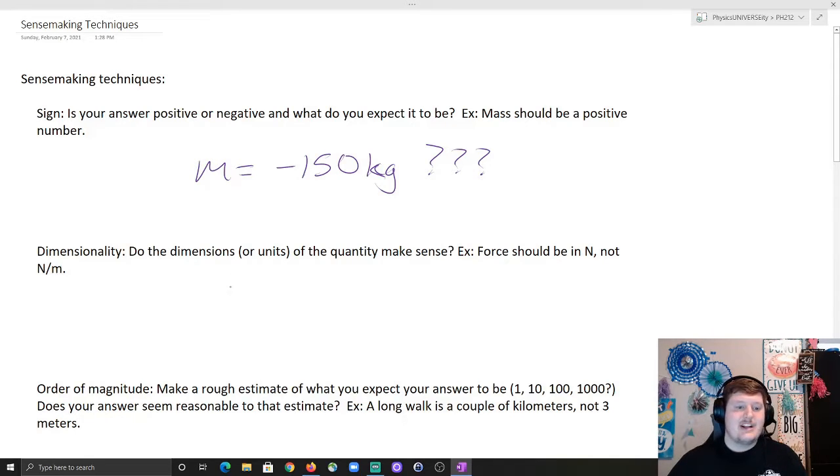Next is dimensionality. Dimensionality is just the generic or generalized form of units. So let's just say the dimensions of something are length. The units of length then are meters, but the dimensions would be the generic length, generic time, generic whatever. So do the dimensions or units of the quantity make sense.